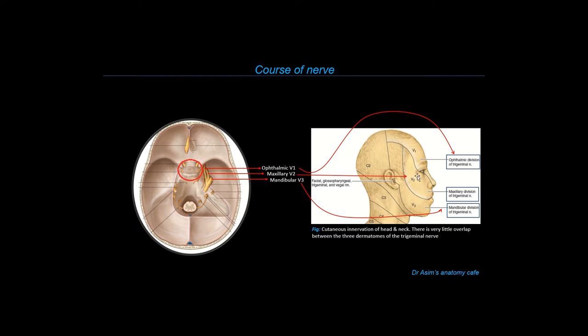The general somatic sensory information from the maxillary region is carried by the neurons which run inside the maxillary division of the trigeminal nerve. And in the lower jaw region, all the general somatic sensory information from the lower jaw is carried by the neurons which run inside the mandibular or V3 division of the trigeminal nerve.